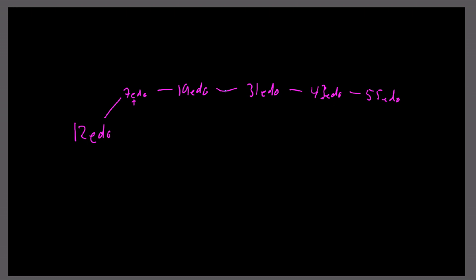By adding 7 EDO to 12 EDO we created this chain of meantone tunings, adjustable by adding different diatonic equal temperaments. We could add another 7 EDO to 19 EDO to get 26 EDO — still meantone but very flat with a different character. From there, adding another 7 to 43 gives 50 EDO. Both 50 EDO and 55 EDO are historically quite important meantone tunings. 31 EDO is especially notable because it's essentially almost exactly quarter-comma meantone, a historically very important tuning used a lot in European classical music.